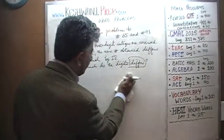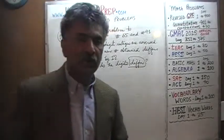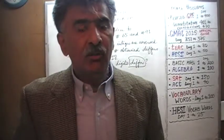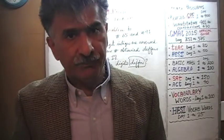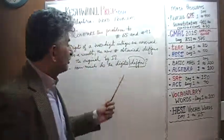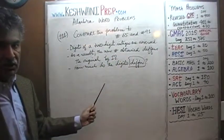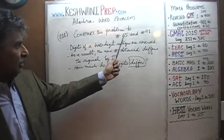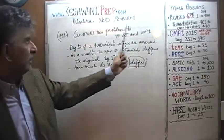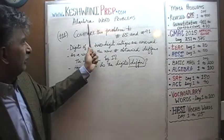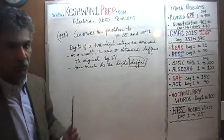The second thing we need to understand is the concept of being able to write a two-digit integer in the language of algebra. If you have not watched problem number 65 and 91, pause this video immediately. Search for number 65 and number 91 under algebra word problems — just type in 'algebra word problem 65' and the video will pop right up — and watch those videos first.